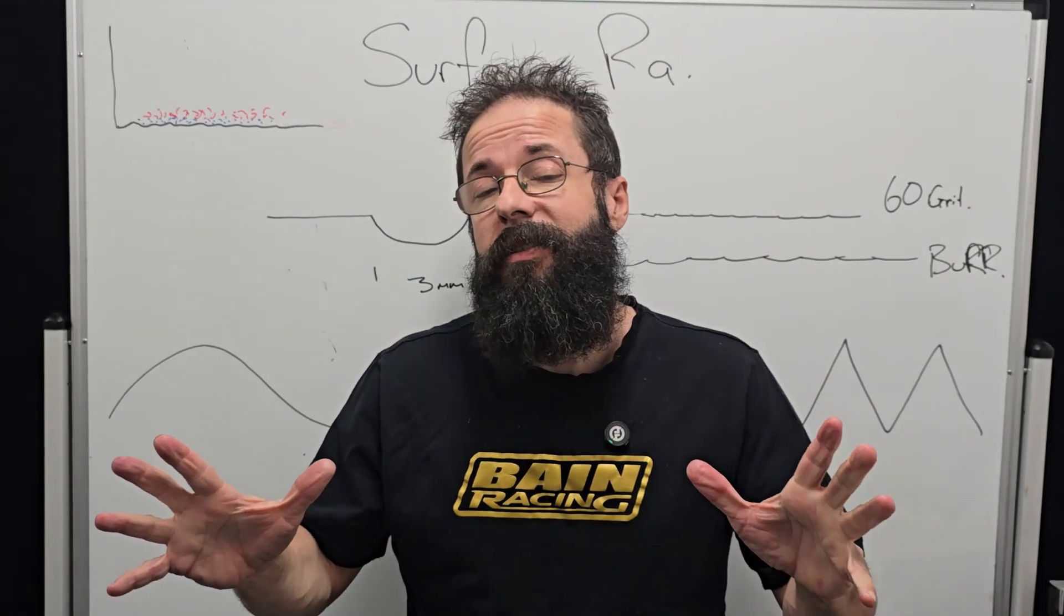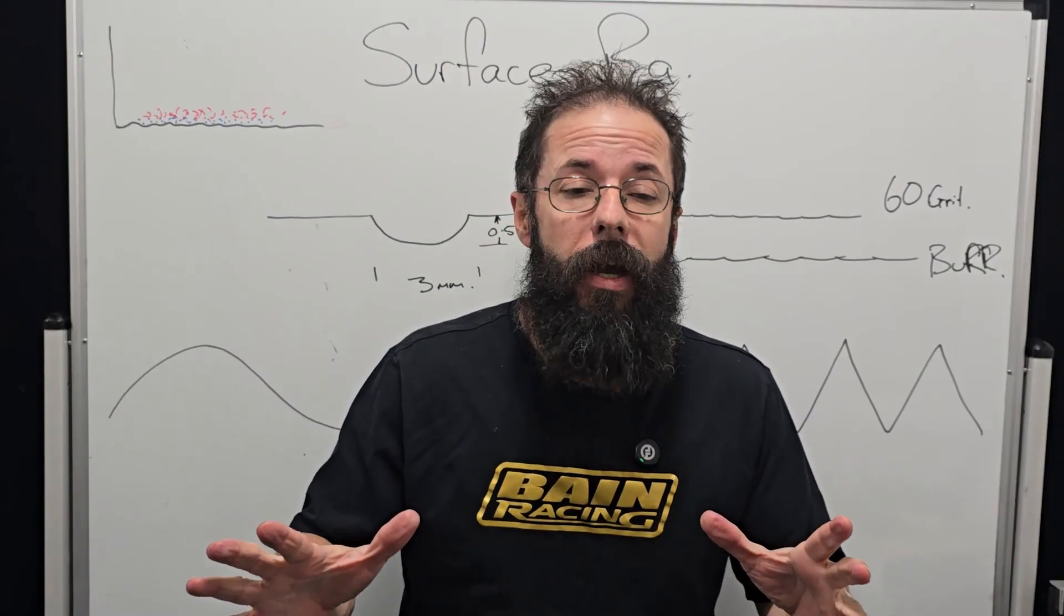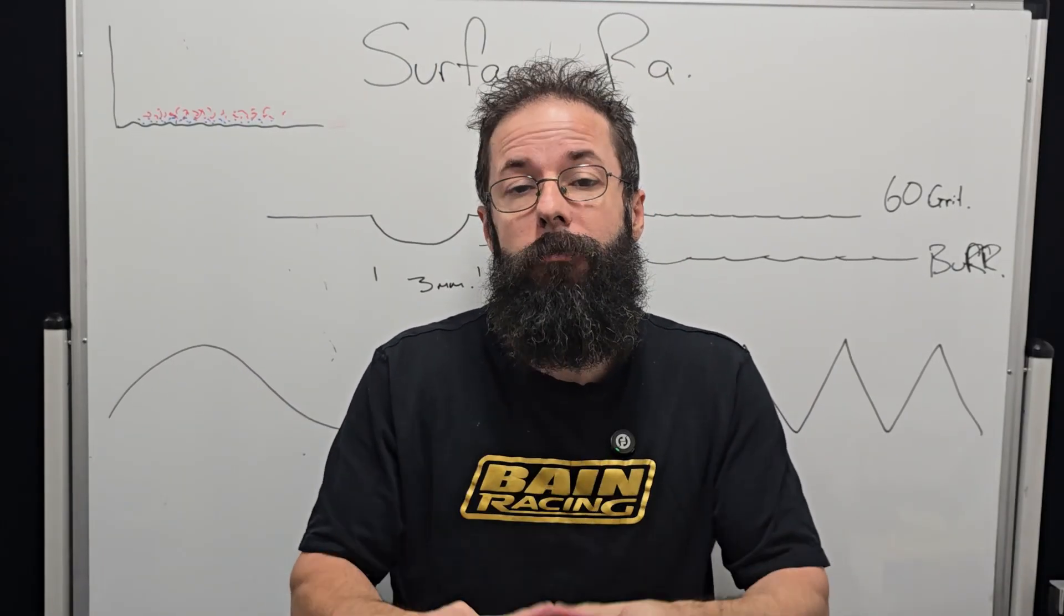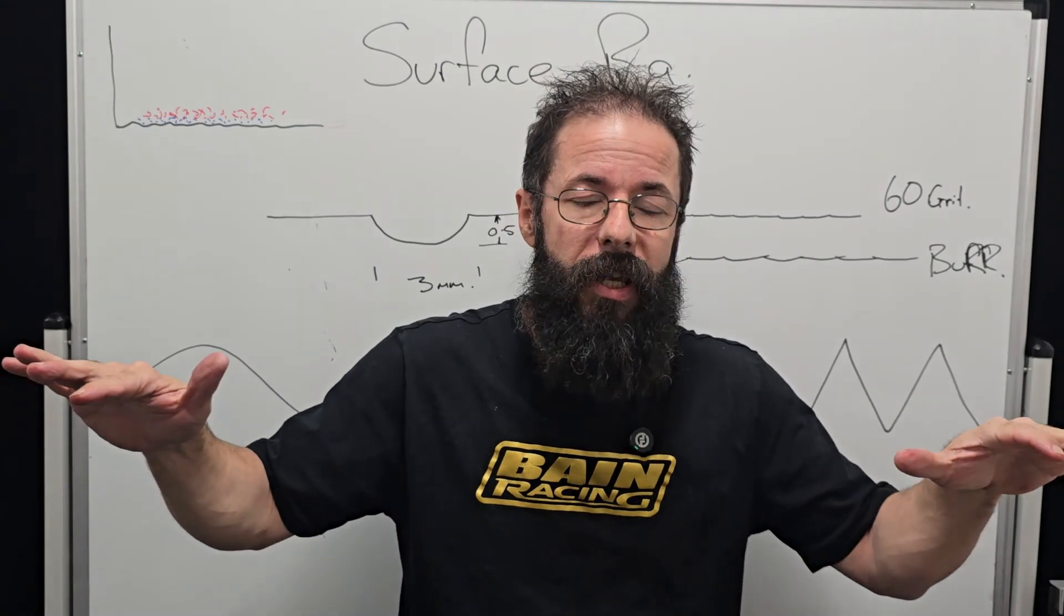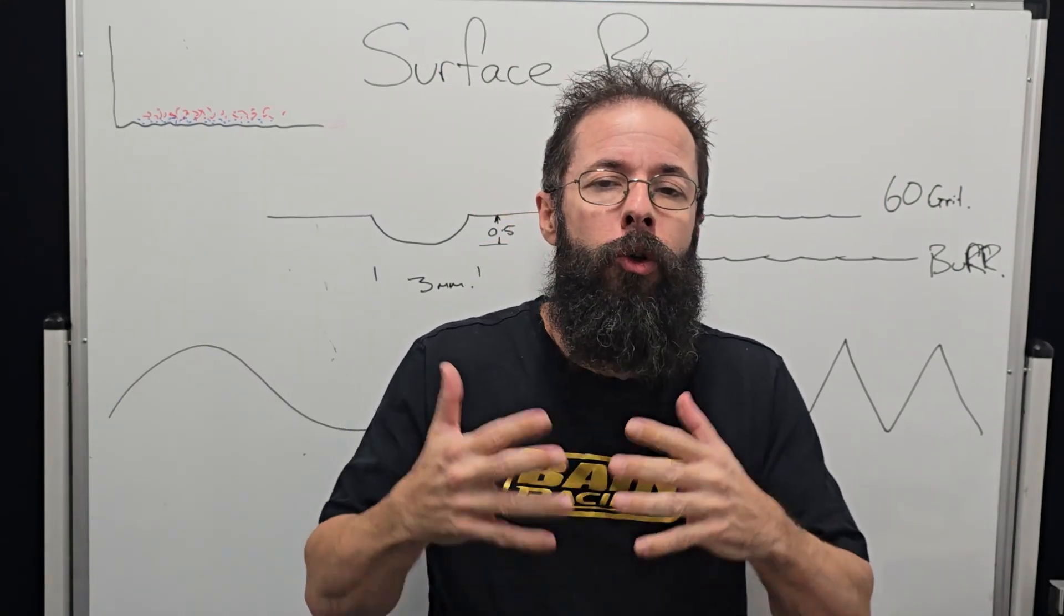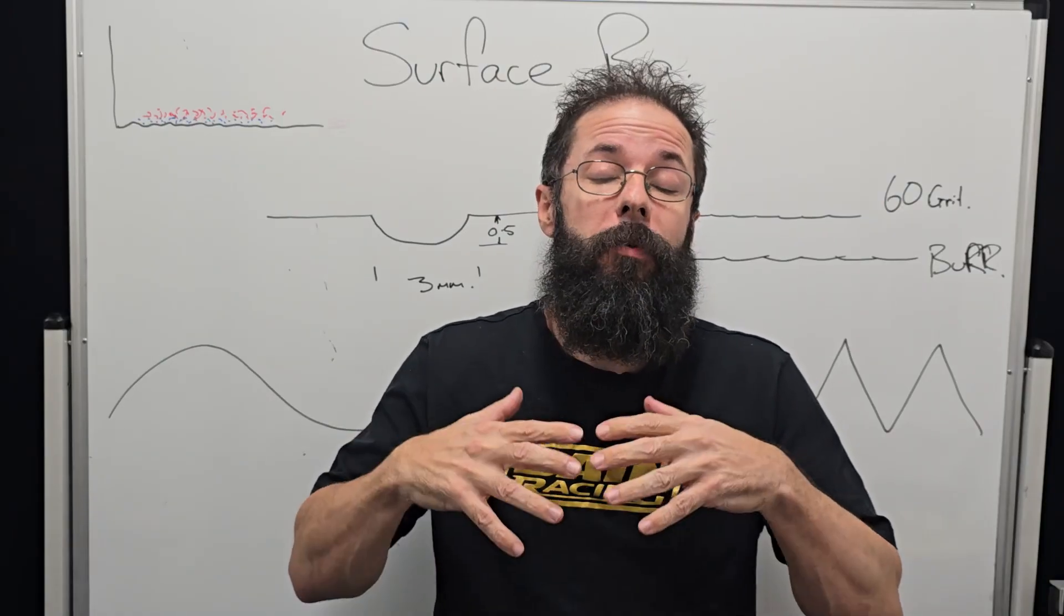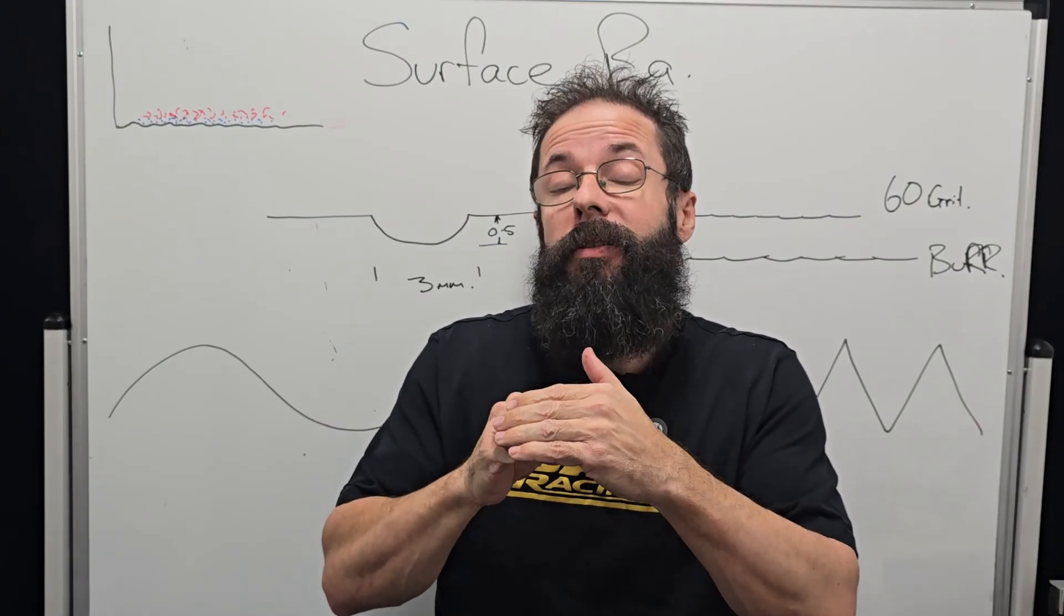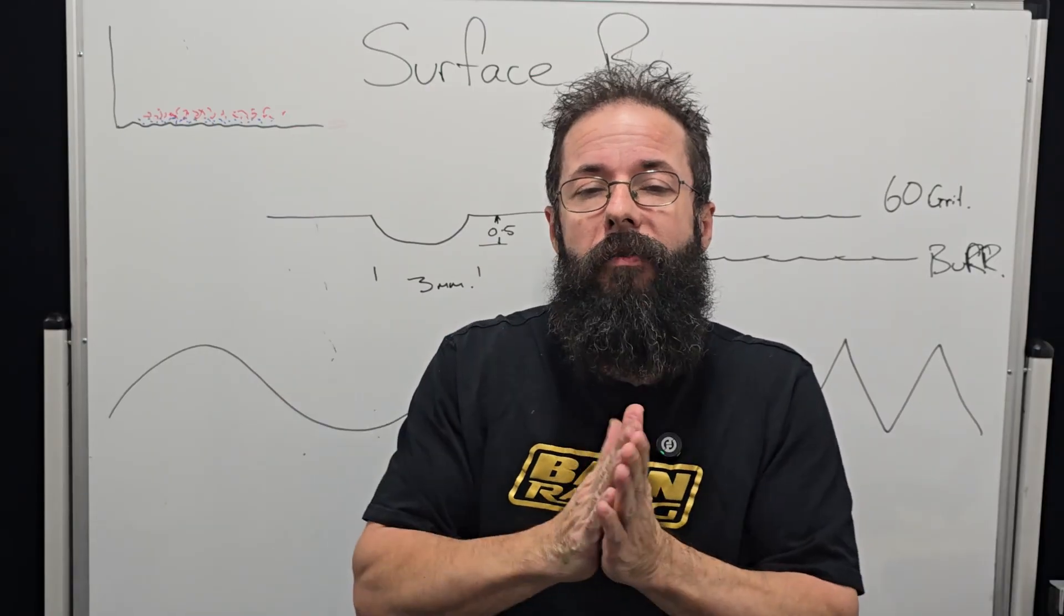That takes us into surface Ra. What is surface Ra? Surface Ra is basically just a measurement of how coarse the texture is. I've talked about this before in intake manifolds: we do not want polished intake manifolds because it is an active boundary mechanism.